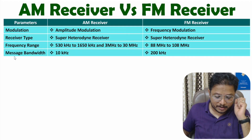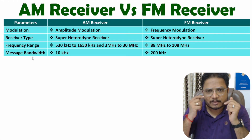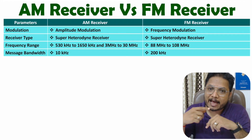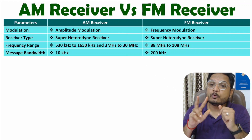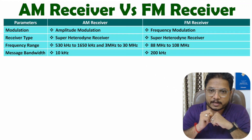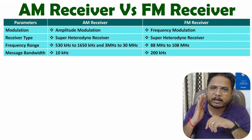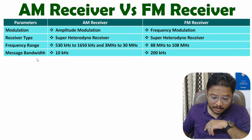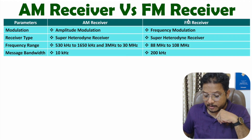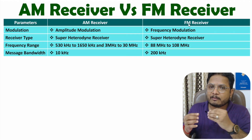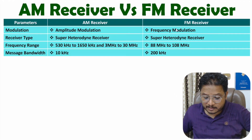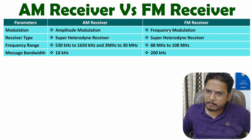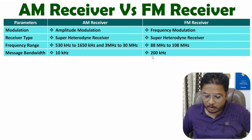The next parameter is message bandwidth. In AM receiver, with amplitude modulation, bandwidth will be 2 times the message signal frequency. With voice communication, message signal frequency will be up to 5 kHz, so with AM receiver, bandwidth is 2 × 5 = 10 kHz. With FM, we have bandwidth as per Carson's rule, where wider bandwidth is needed. Always remember: frequency modulation needs more bandwidth; amplitude modulation needs less bandwidth. With FM receiver, bandwidth will be 200 kHz, which is much higher compared to AM receiver.